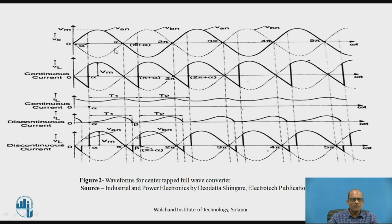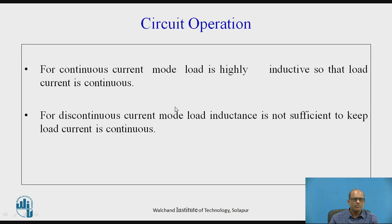So this is the input voltage Φ_AN and Φ_BN, and this is the waveform for load voltage for continuous current mode. This is the circuit operation for continuous and discontinuous current mode, which we have explained earlier.